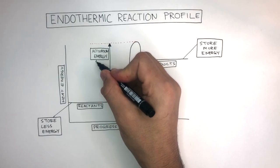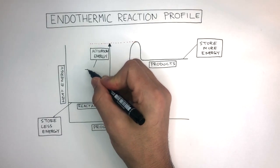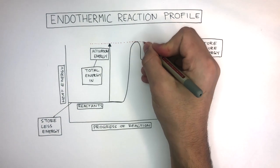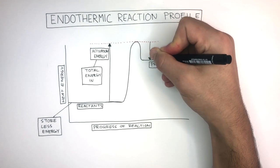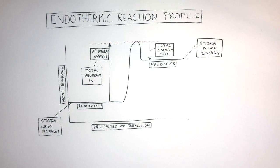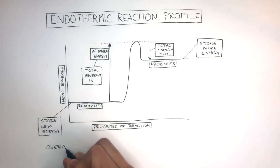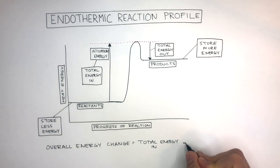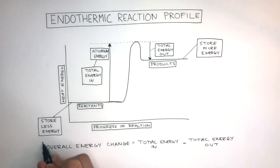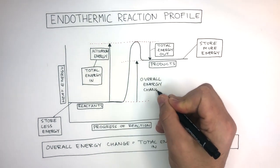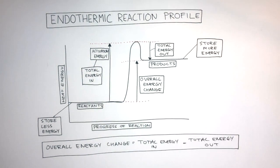The activation energy is always equal to the total energy in, and the top of the hump going down to the products is always equal to the total energy out. To calculate the overall energy change: overall energy change equals total energy in, take away total energy out. From the reactants to the products is the overall energy change, and this is a positive energy change as the products are storing more energy than the reactants.